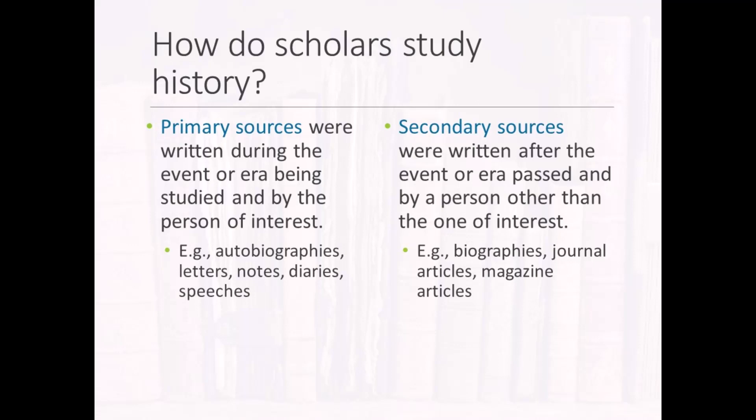Let's differentiate between the types of writings or sources studied by historians. Primary sources are first-hand accounts of history — written by the person of interest during the event or era being studied. Examples include autobiographies, letters between two or more people, research notes, diary entries, and speeches. If we are interested in learning about Sigmund Freud, his letters to Carl Jung and Alfred Adler are a primary source. Secondary sources are second-hand accounts of history written by someone other than the person of interest, created after the event or era has passed. Examples include biographies, journal articles, magazine articles, books, and interview notes. Letters written by Jung and Adler about Freud would qualify as secondary sources.